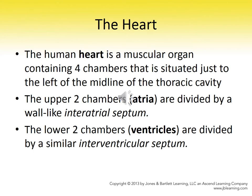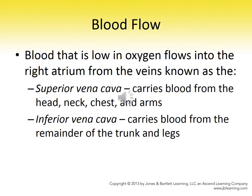The heart is broken into four chambers. The upper chambers are our atria, and the lower chambers are our ventricles. Here's the key point: atriums are receiving chambers — they receive blood. Ventricles are pumping chambers — they pump blood. Now let's look at how blood flows through the heart.